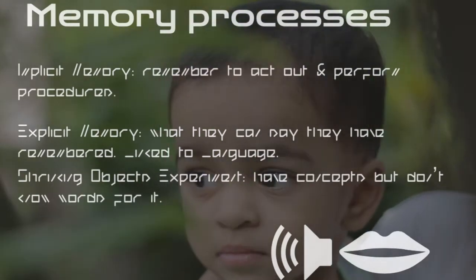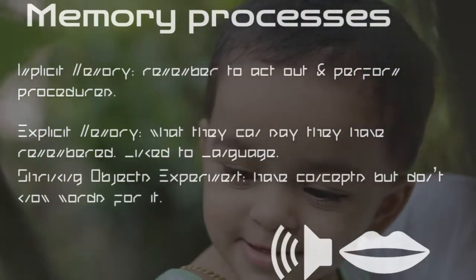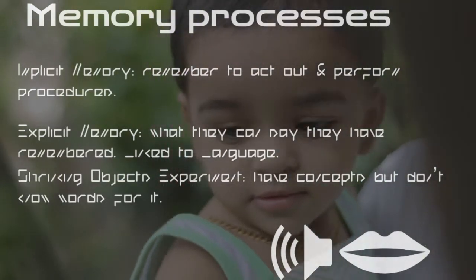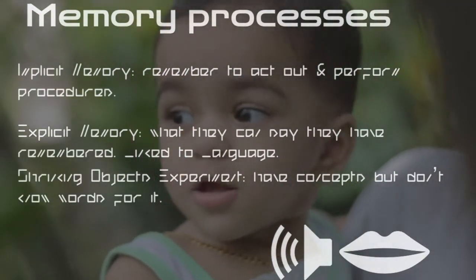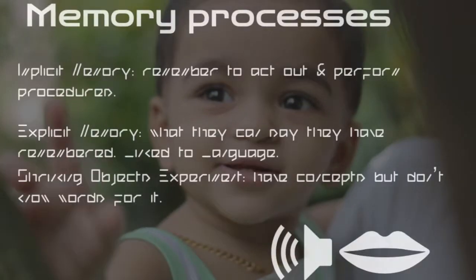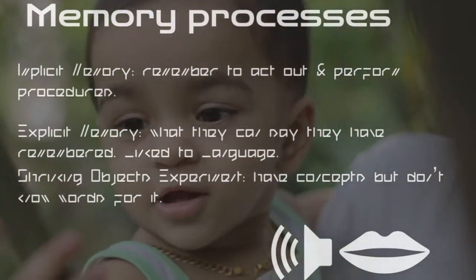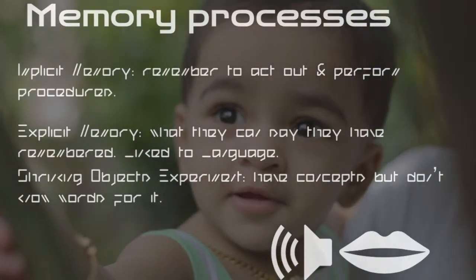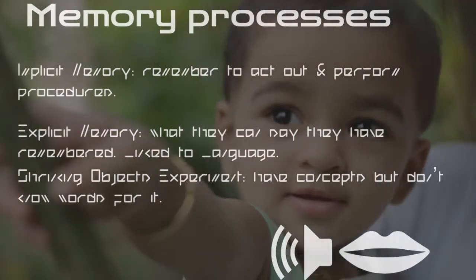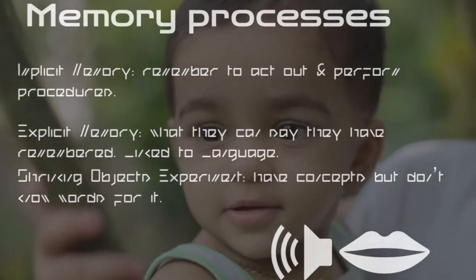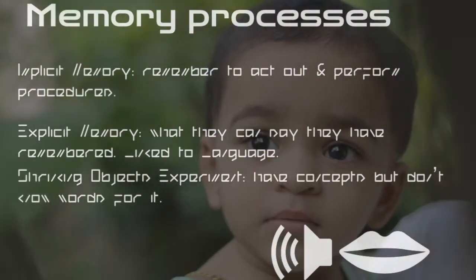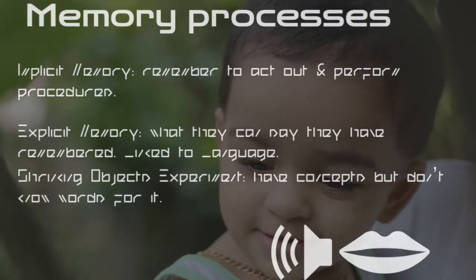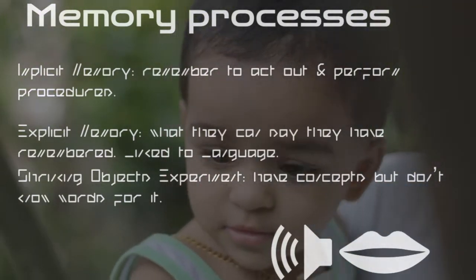In addition, infants' memory has two different processes that are not necessarily in communication with each other. The implicit memory is what they can remember to act out and perform procedural tasks, and what they feel in reaction to certain circumstances. On the other hand, the explicit memory is what they can say they have remembered doing. Explicit memory relies on the development of language, and infants have a hard time remembering through words before the development of language, but can communicate with certain actions or procedures learned, as shown in the shrinking objects experiment.